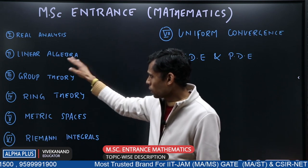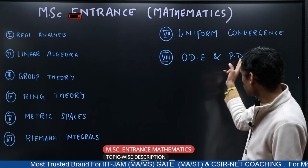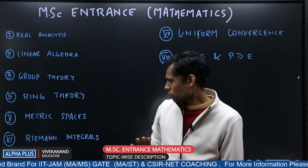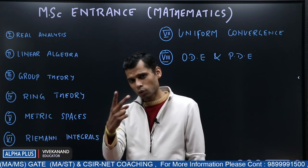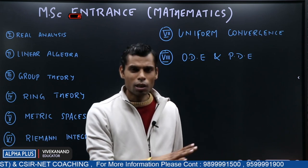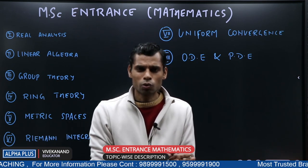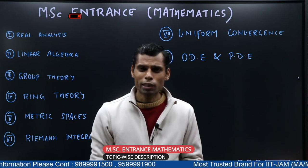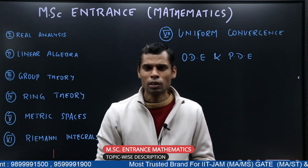Linear Algebra is very beautiful but you need to study it completely. In Group Theory and Ring Theory, the same pattern as ODE and PDE — students do Group Theory and skip Ring Theory, but Ring Theory questions are more. From Metric Space usually 2 questions come, from Riemann 2-3 questions, from Uniform Convergence 1-2 questions, and ODE/PDE has a large portion. Numerical Analysis also appears — one question from Newton-Raphson and related methods. For any queries or confusion, the link in the description box can be used to contact us. Thank you very much.